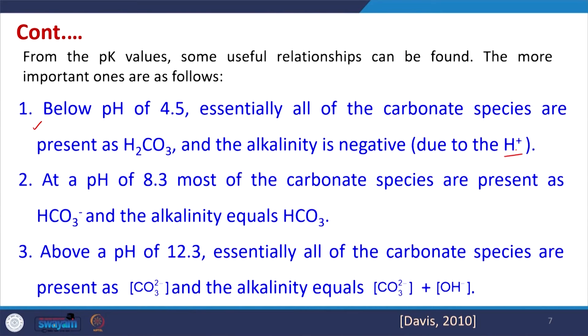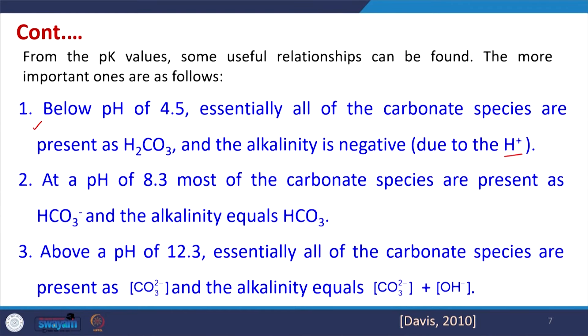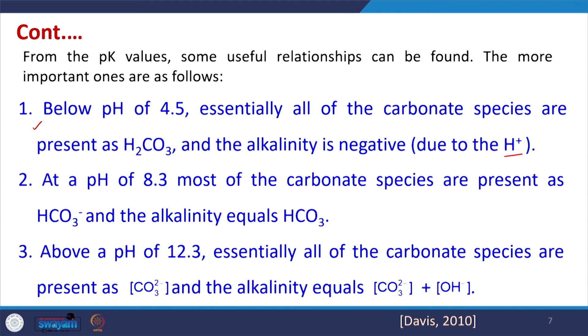Both these pKa values can be used together and give a lot of useful information. From the pKa values, useful relationships can be found: below pH 4.5, all carbonate species are present only as H2CO3 and alkalinity is negative. Under that condition, the alkalinity will be negative — only H⁺ will be there — so alkalinity becomes negative.